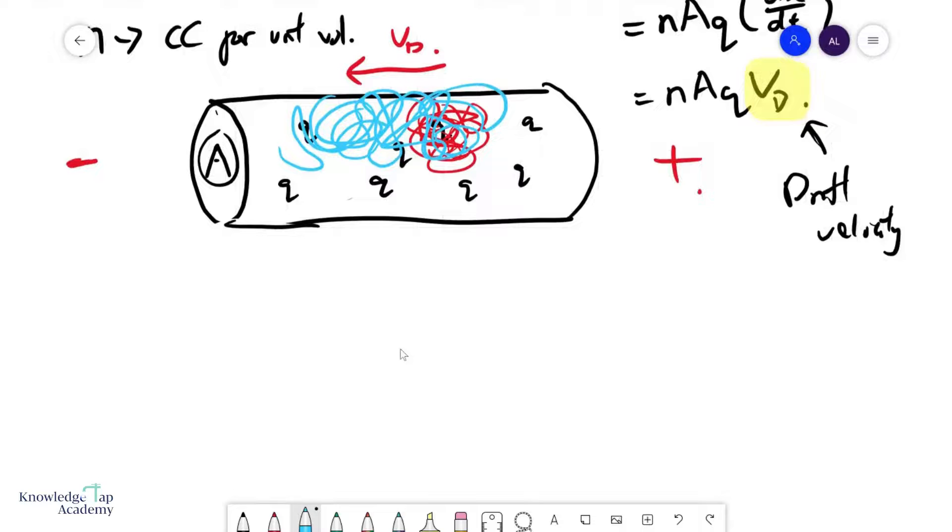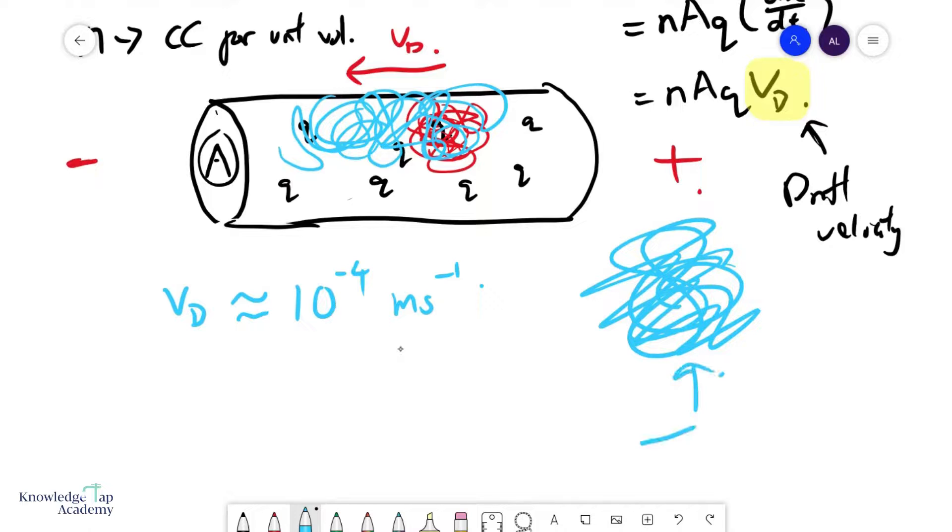So, let's bear in mind that the drift velocity typically is a very small value. Most of the time, you can expect it to be in the order of 10 to the minus 4 meters per second. And it should not be confused with the actual velocity of these charge carriers, which is basically random motion.